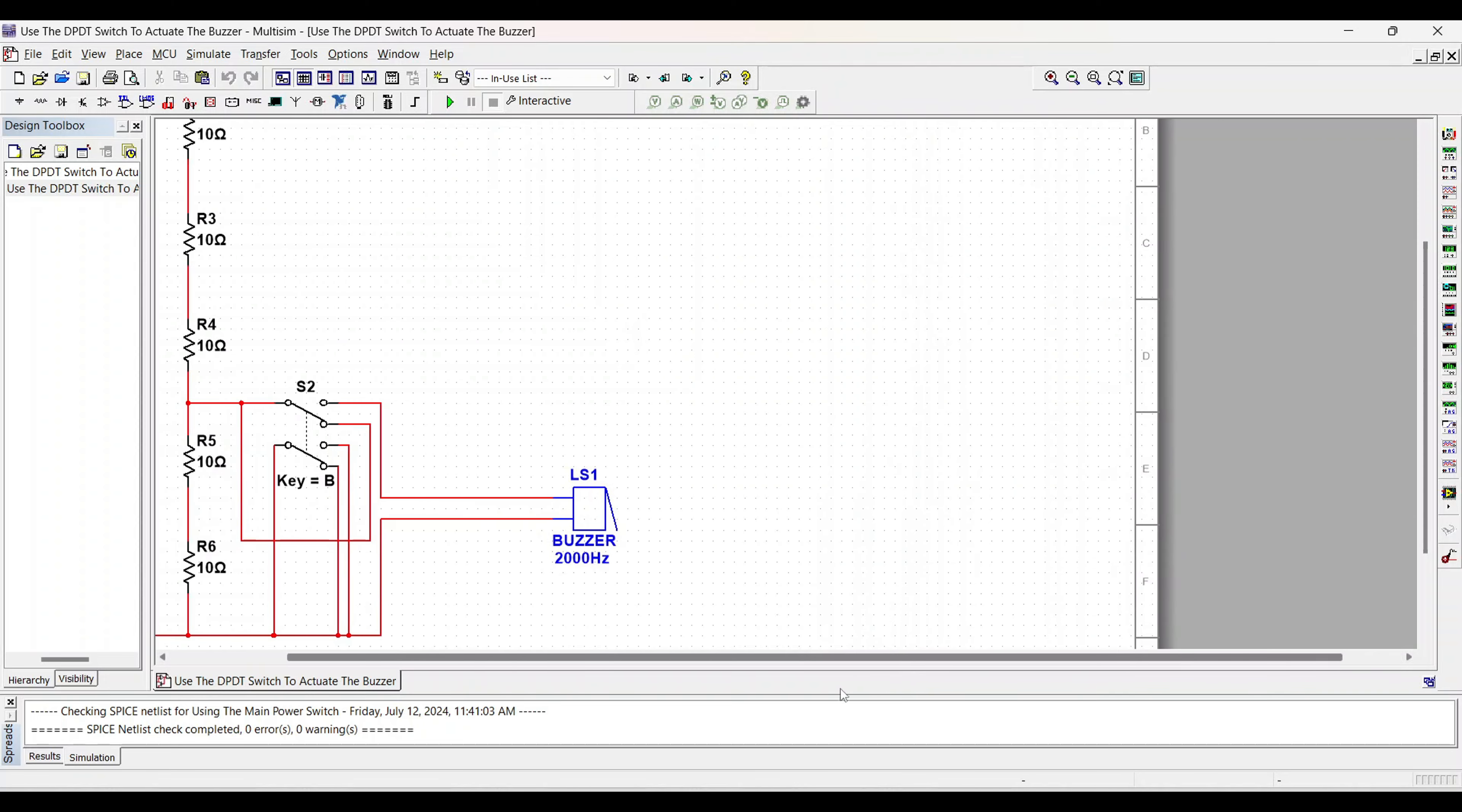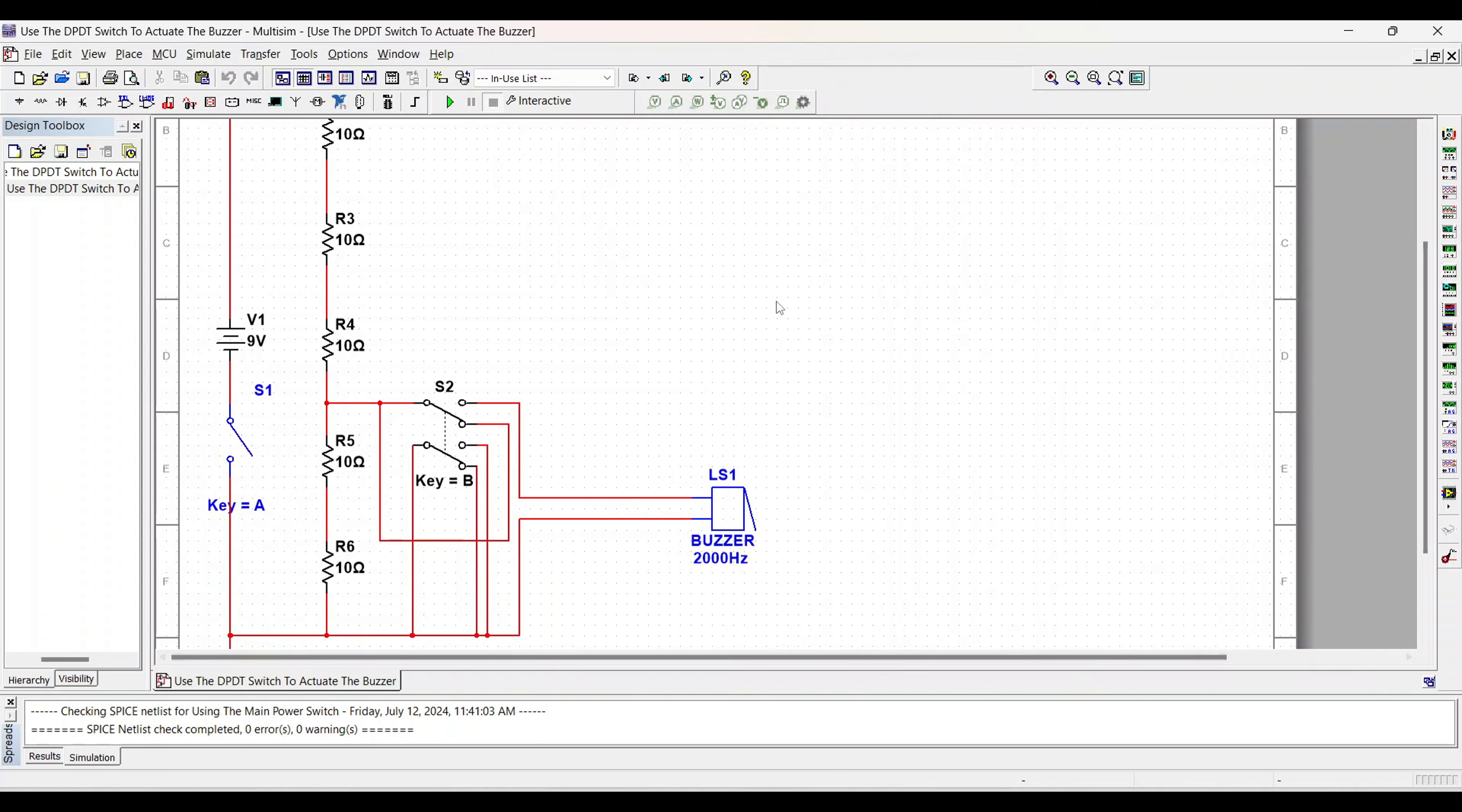So we got our main power switch right here, turned off right now. And this right here is our double pull double throw switch. So it looks a little different but I want to familiarize you guys with what it looks like in a schematic.